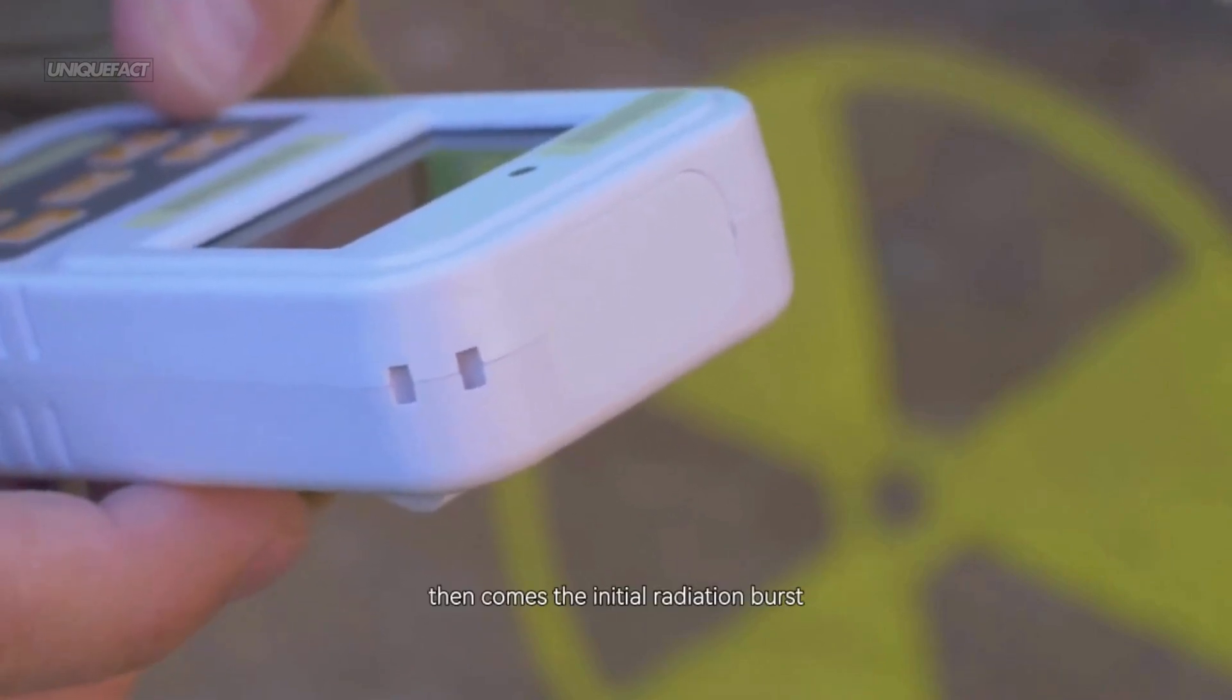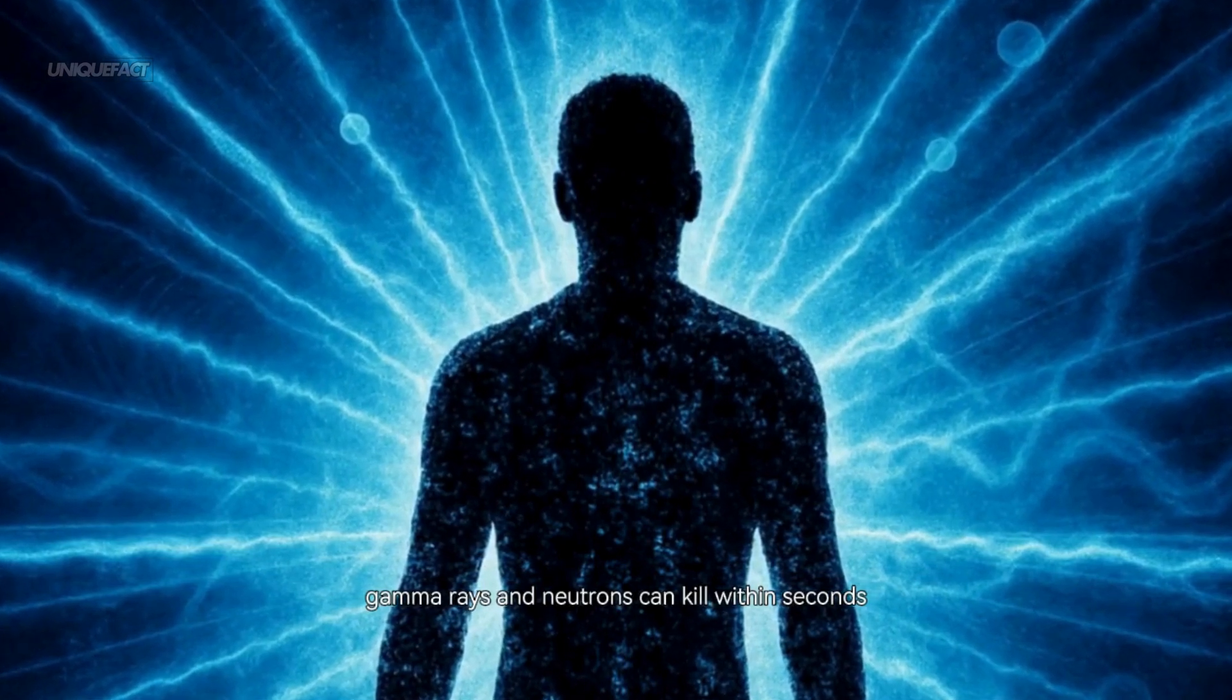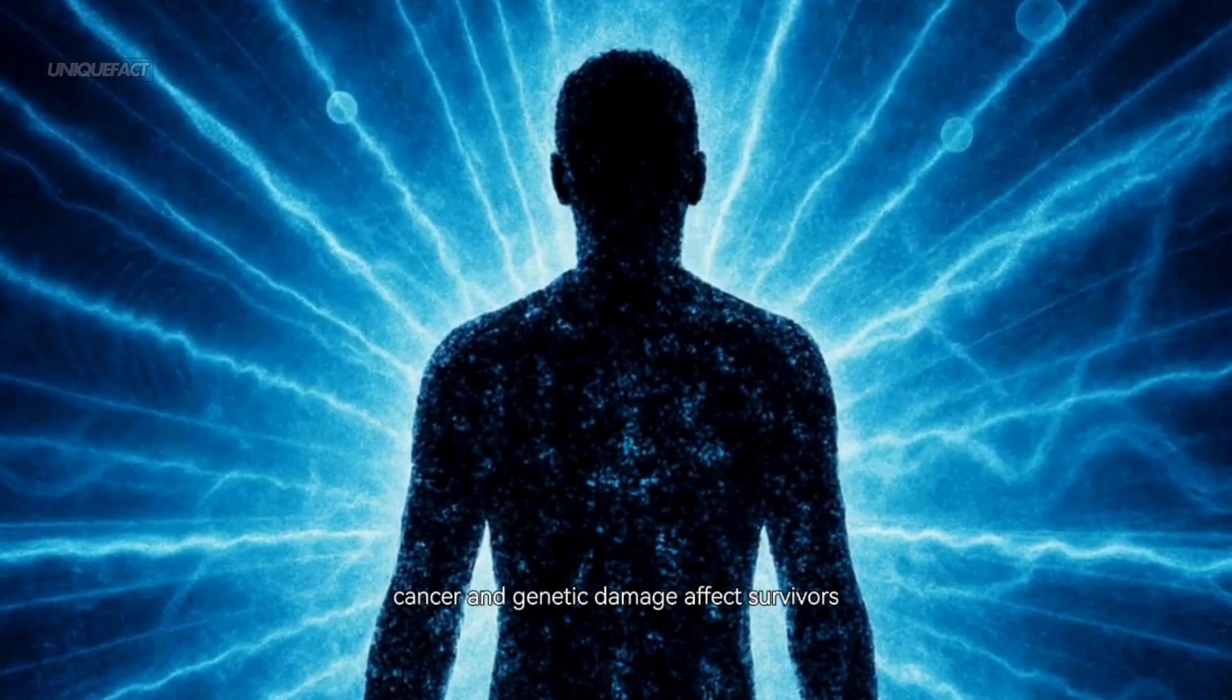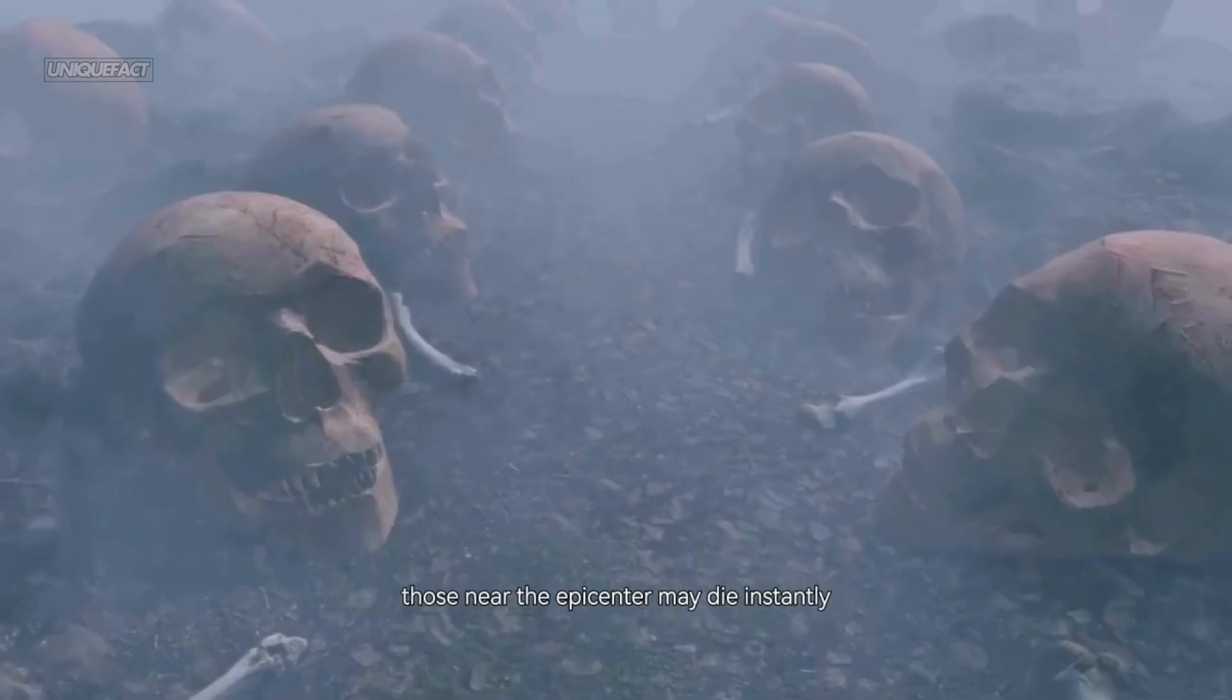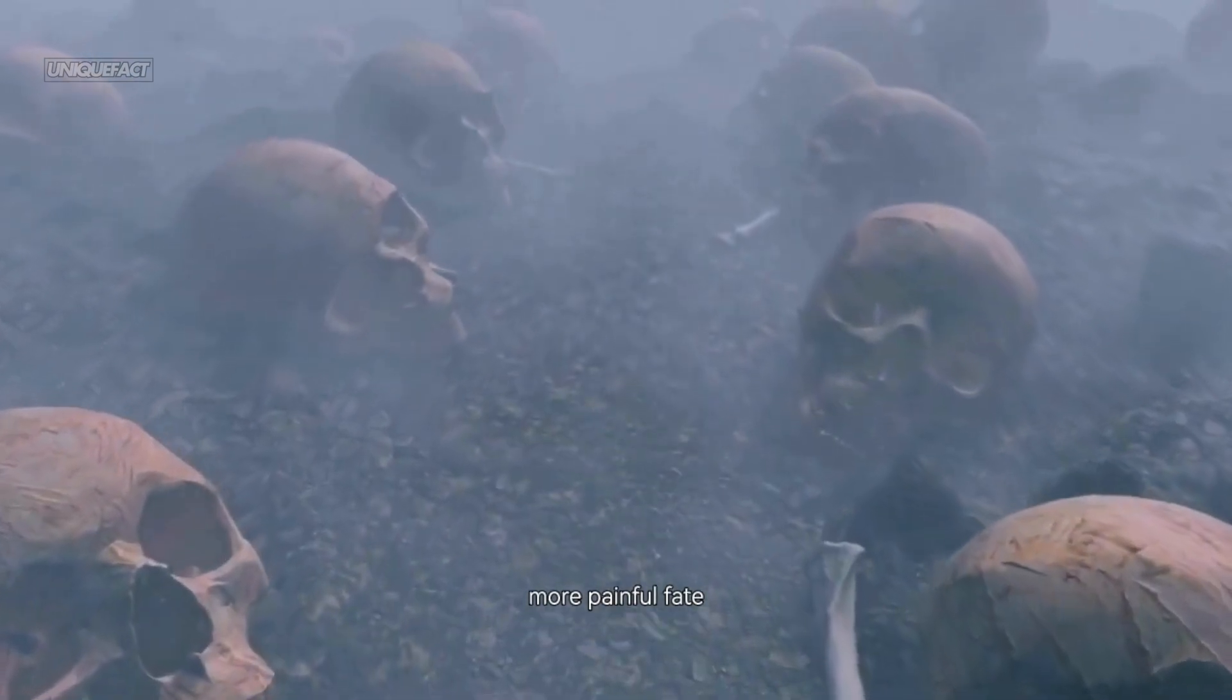Then comes the initial radiation burst, invisible but deadly. Gamma rays and neutrons can kill within seconds to minutes from exposure, cause radiation sickness, cancer, and genetic damage affecting survivors decades after the blast. Those near the epicenter may die instantly, while those farther out may suffer a slower, more painful fate.